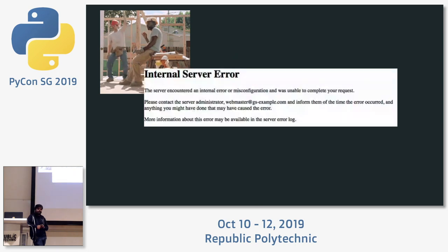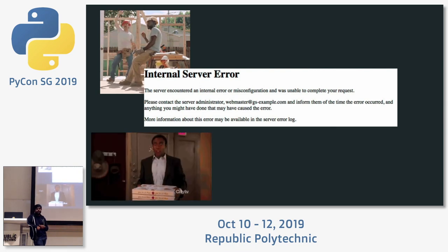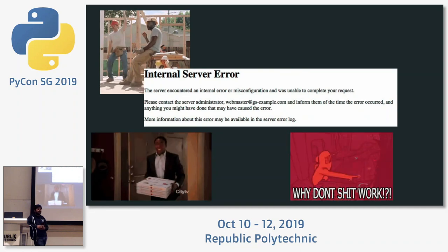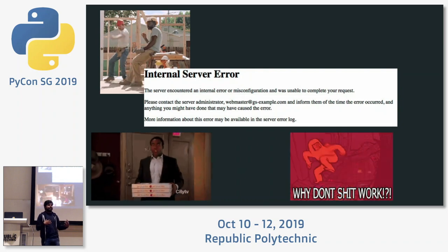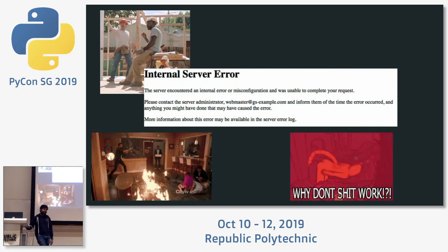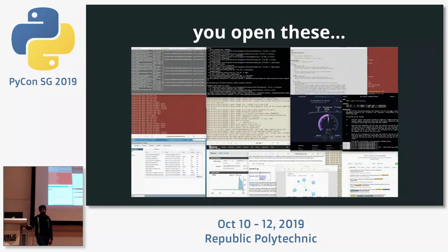Then suddenly you start seeing 500, 503, or 404 errors. Errors start coming up and you get that feeling that things are not well. You get calls from your manager. You start fighting fires — things are not controlled. You open all your tools and techniques. You run git diff to see what changes went through — did I check in something that wasn't fully tested?